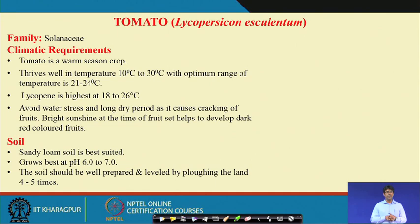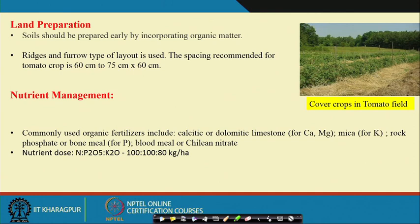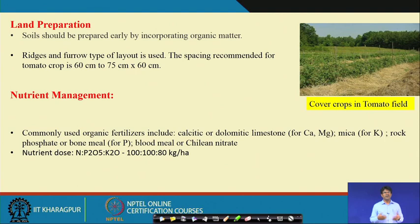For soil, sandy loam soil is best suited for tomato, with pH in the neutral range of 6.5 to 7. The land should be prepared by primary and secondary tillage. Ridges and furrows are made with row spacing of 60–75 cm and plant spacing within the row of around 60 cm. Spacing can vary depending on variety type — bushy or upright — to provide optimum growth and development.